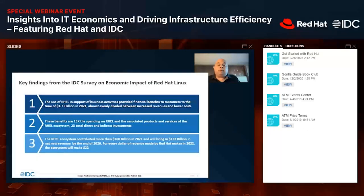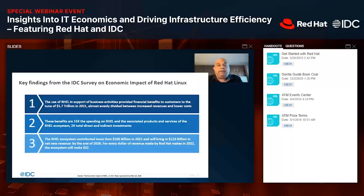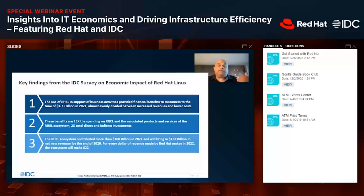The first finding is that the use of Red Hat, in support of business activities, provided financial benefits to customers to the tune of $1.7 trillion in 2021 — almost evenly divided between revenues and lower costs. That number is staggering. If you take that and look at the spending, it's 15 times the spending on Red Hat Linux and associated products and services — and two times the total direct and indirect investments. The Red Hat ecosystem contributed over $100 billion in 2021 to the economy and will bring in $123 billion in net new revenue by the end of 2026. For every dollar of revenue Red Hat makes in 2022, the ecosystem will make 22 times that — $22.